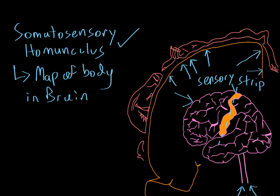So basically, information from various parts of the body comes into the brain, hits the sensory strip, and always goes to one specific part of that sensory strip. For example, this region here represents your face — information from the lips comes right here, information from the eyes goes over here, and so on. The sensory strip always receives information from different parts of the body, and that information always goes to one dedicated part of the sensory strip.